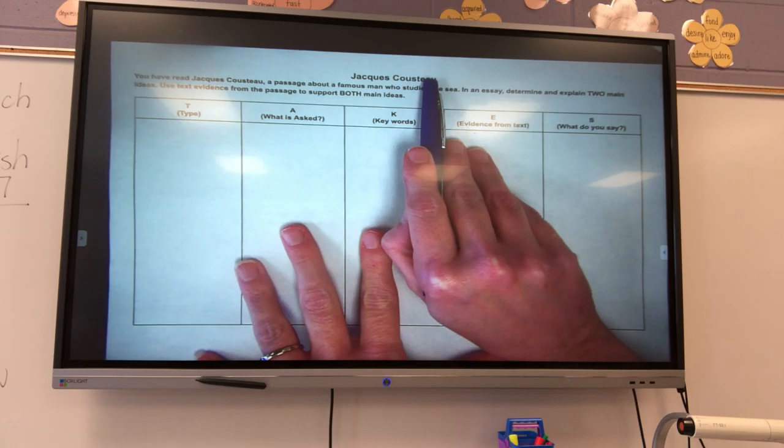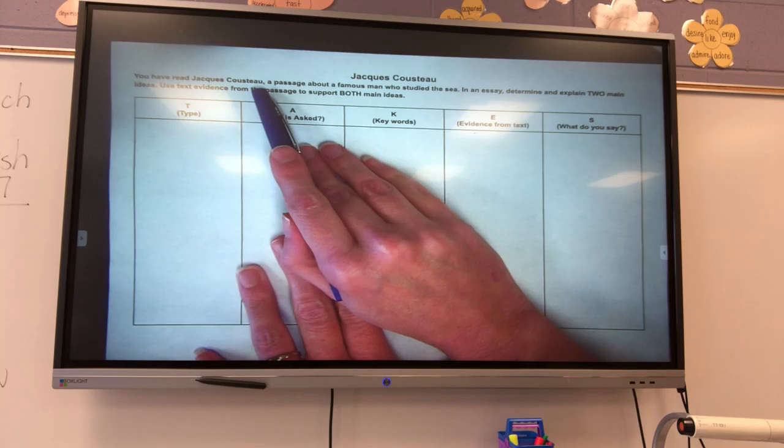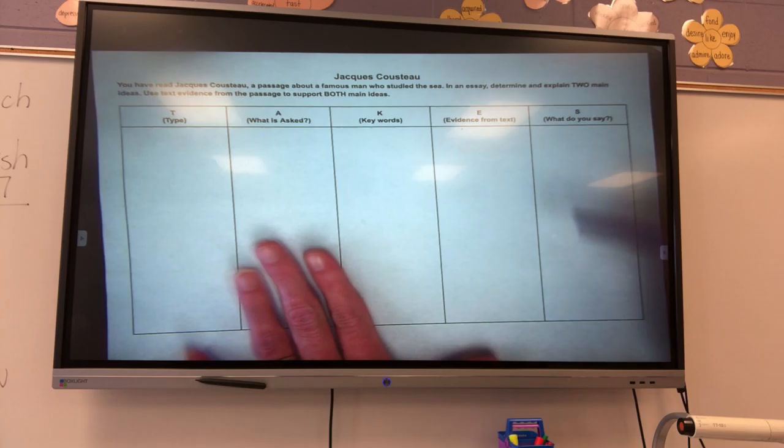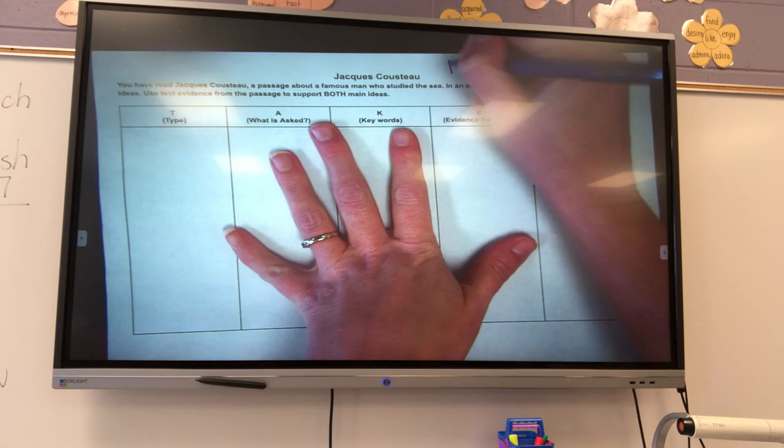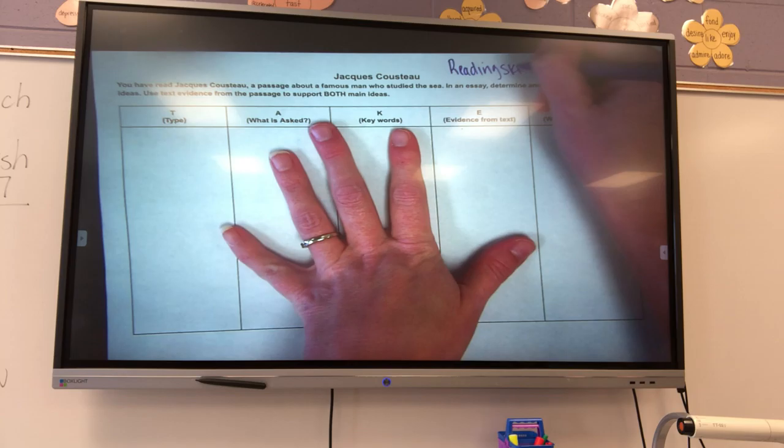Alright, first we have Jacques Cousteau. So my passage is going to be called Jacques Cousteau when I do read it. It says, You have read Jacques Cousteau, a passage about a famous man who studied the sea. In an essay, determine and explain two main ideas. Use text evidence from the passage to support both main ideas.